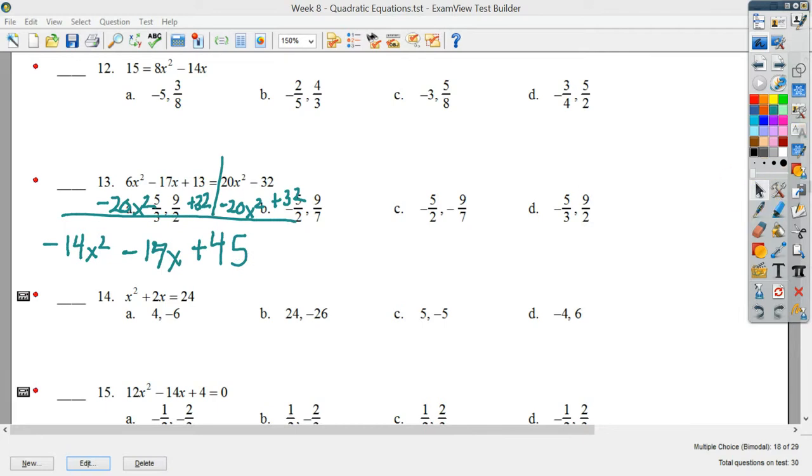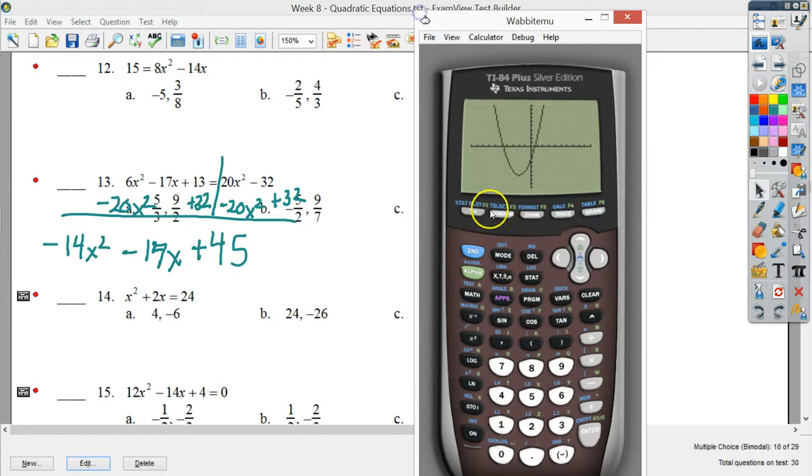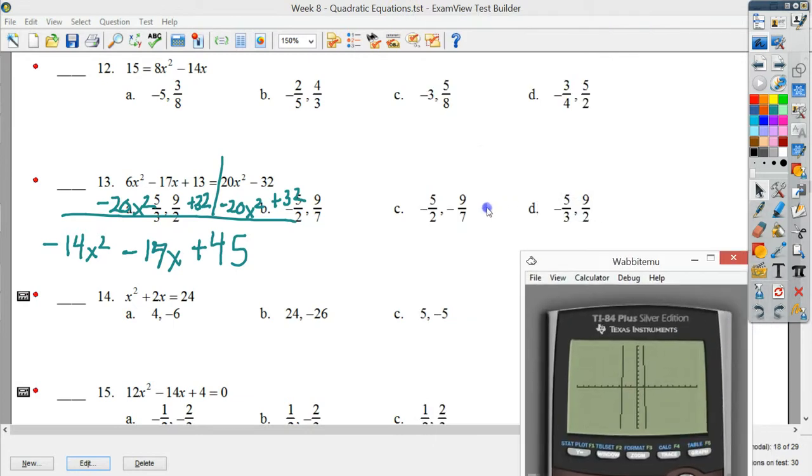Now I can go in and graph these or graph this if I want. I'd get a y equals because now this side would be equal to zero. So I could just clear it out. Type in negative 14x squared. It'll be upside down, by the way. Minus 17x plus 45. And I just hit graph.